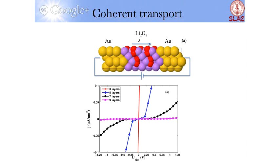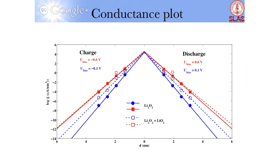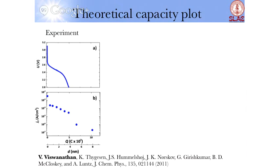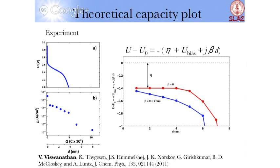We calculated this for a range of structures. For stoichiometric lithium peroxide, the current as a function of bias shows that at three layers (~1 nm), a large current can be supported. At five layers, the current massively decays; at seven and nine layers, it dies off entirely. This is classical tunneling — an exponential decay in current as a function of distance. Plotting the log of current versus thickness gives a clean exponential falloff, and the tunneling limit is estimated at about 6 nanometers.